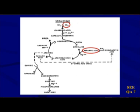Magnesium comes in at that step. Carbamyl phosphate combines with ornithine, and then under the influence of biotin, carbamyl phosphate and ornithine produce citrulline. Citrulline then combines with aspartic acid from the citric acid cycle, and again under the influence of magnesium, to produce arginosuccinic acid.